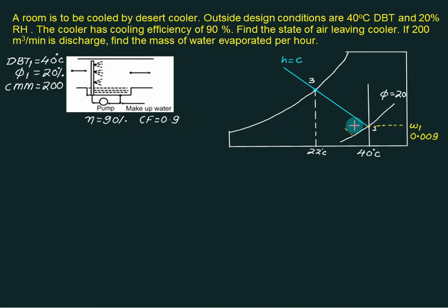The contact factor is 0.9. It means that you have to move only 0.9 distance from this side. So where it ends that is point number 2. So this one is called as contact and this one is maximum possible contact.